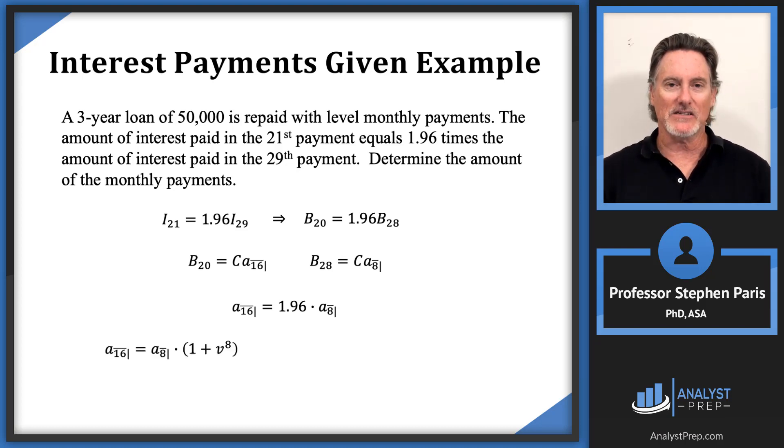And I see that a angle 16 is a angle 8 times 1 plus v to the 8. So comparing these last two equations, you can see then that the 1 plus v to the 8th there must be the 1.96. And then that's going to give me the v to the 8th is 0.96.